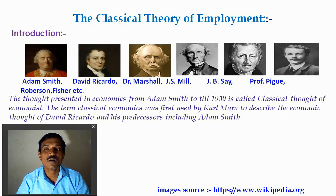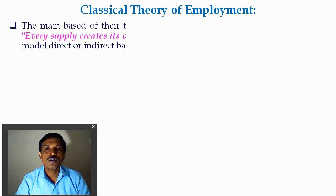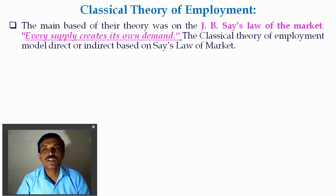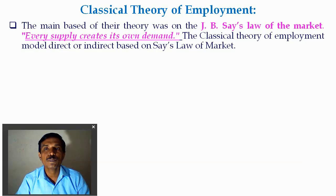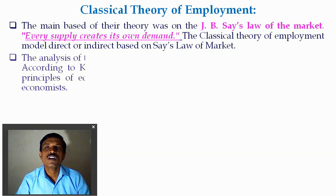The term 'classical economics' was first used by Karl Marx and described in his economic thought of David Ricardo and his previous advisors including Adam Smith. The classical theory of employment is mostly based on J.B. Say's law — John Baptist Say's Law of the Market. The classical theory is directly and indirectly based on the Say's Law of Market.